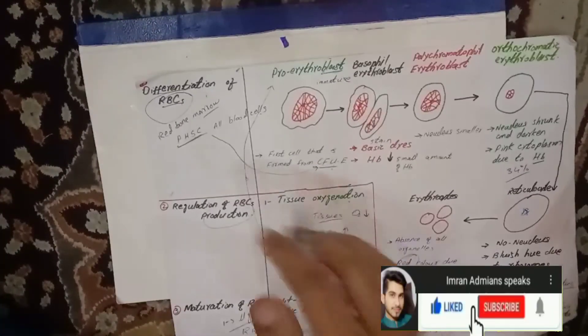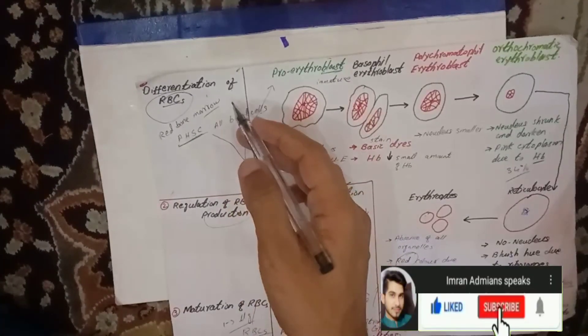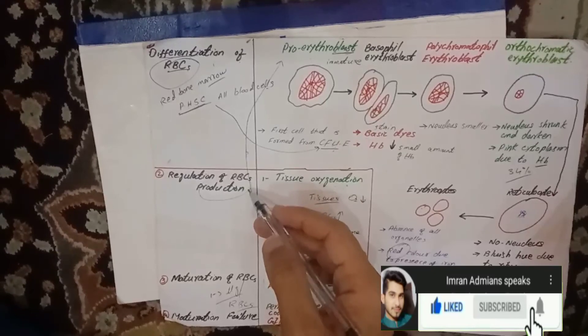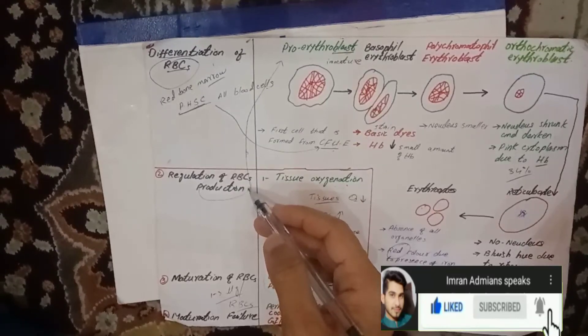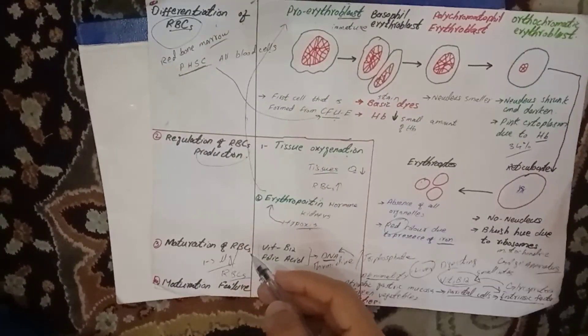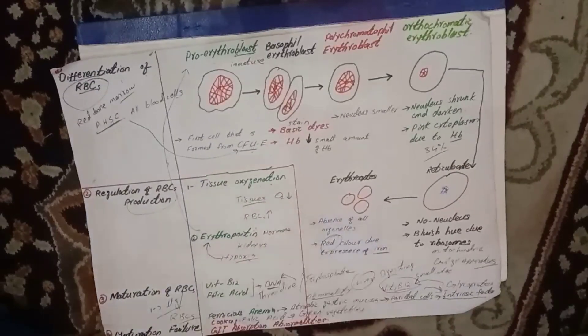In summary, the four topics covered are: differentiation of red blood cells, regulation of red blood cell production, maturation of red blood cells, and maturation failure of red blood cells.